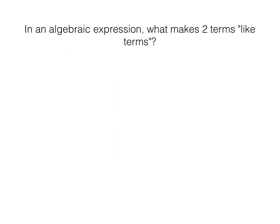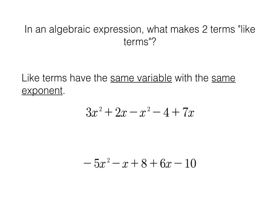In an algebraic expression, what makes two terms like terms? Well, like terms have the same variable with the same exponent. So it's not enough to have the same variable. Got to have the same exponent. So let's color code here. Let's use red to underline the first set of like terms I come to. So I'm going to start by underlining the 3x². Well, where's a like term to 3x²? You have 2x, but same variable, but not same exponent.